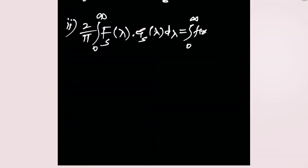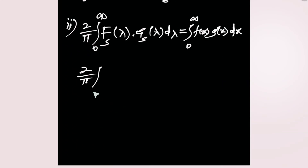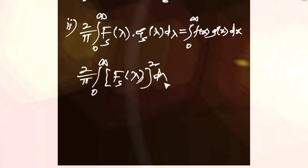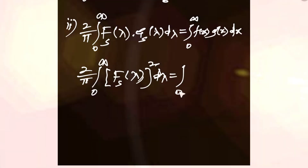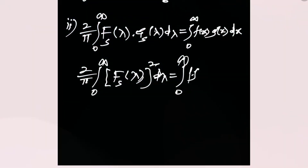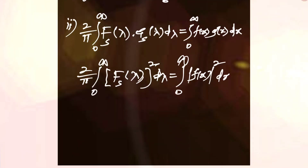For the sine transform: (2/π) integral from 0 to infinity of F_s(lambda) into G_s(lambda) d-lambda equals the integral from 0 to infinity of f(x) into g(x) dx. Second result: (2/π) integral from 0 to infinity of |F_s(lambda)|² d-lambda equals the integral from 0 to infinity of |f(x)|² dx.